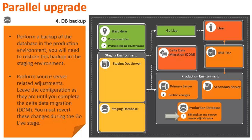In the fourth stage, perform a backup of the database in the production environment. You will need to restore this backup in the staging environment. After the backup is complete, perform the source server related adjustments. Leave the configurations as they are until you complete the delta data migration. You must revert these changes during the go live stage.